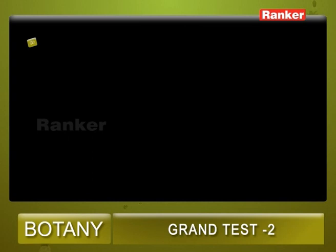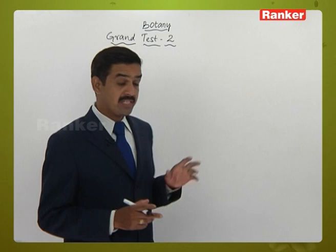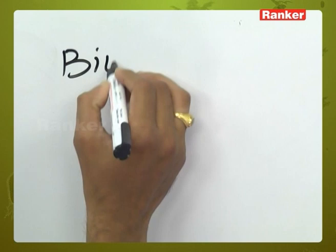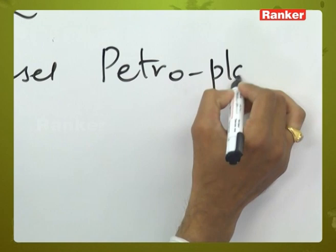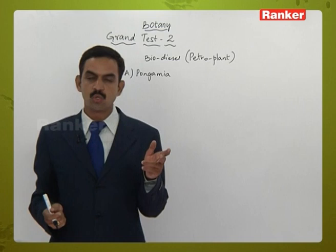Question number three: which of the following plants are rich in hydrocarbons and are a source of biodiesel? Options: A — Pongamia, B — Digitalis, C — Cinchona, D — Jatropha. Options: one - A and D, two - B and D, three - A, B and D, four - C and D. This is related to the economic value of plants — specifically petro plants which produce biodiesel.